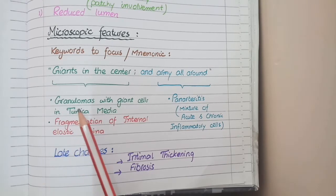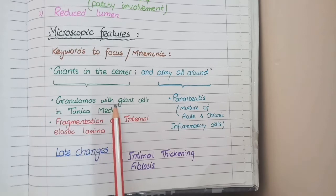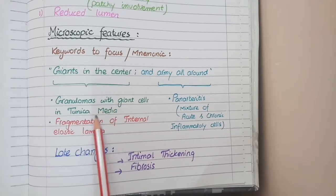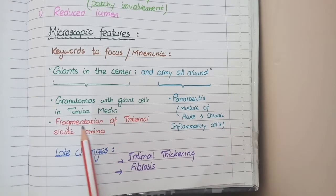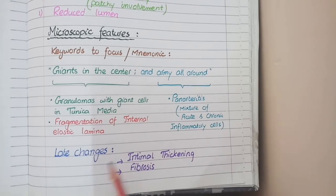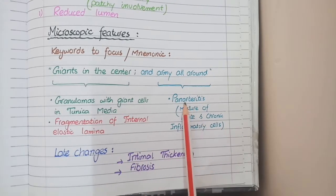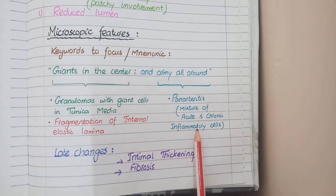Overall, on microscopic view of giant cell arteritis, you see granulomatous inflammation with giant cells in the tunica media, along with fragmentation of the internal elastic lamina, and panarthritis — a mixture of acute and chronic inflammatory cells in all three layers of the blood vessel.